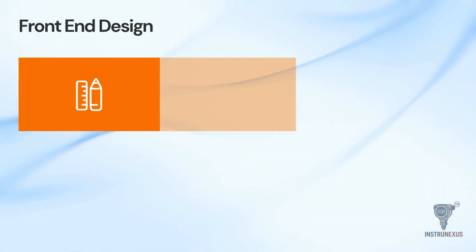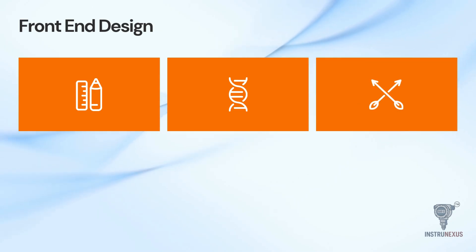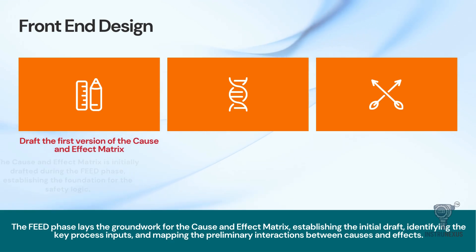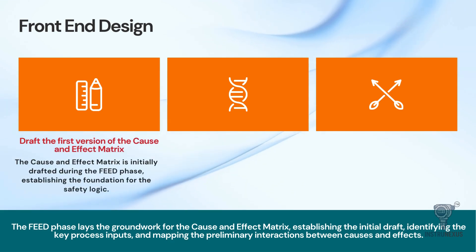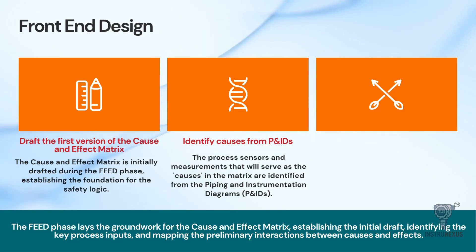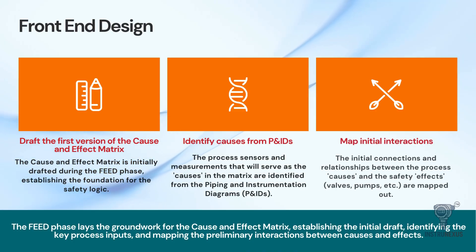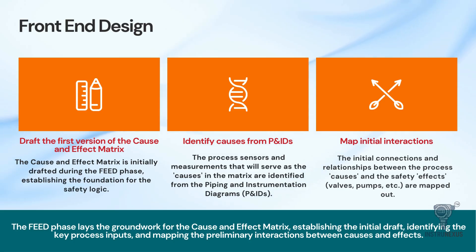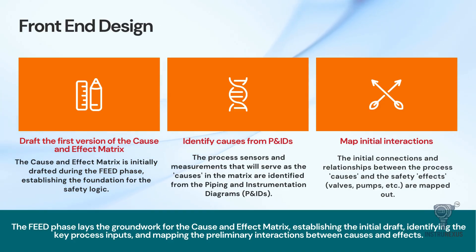Once the concepts are solidified, we move into front-end design, or FEED. This is where the cause and effect matrix is initially drafted. The primary task here is extraction. Engineers look at the piping and instrumentation diagrams, or P&IDs, and identify every sensor and measurement that will serve as a cause. We then map the initial interactions. We aren't looking at the nitty-gritty details of timers or delays yet — we are simply drawing the lines between the inputs and the safety effects, like valves and pumps. This phase lays the groundwork and establishes the foundation for the safety logic that will be developed later.